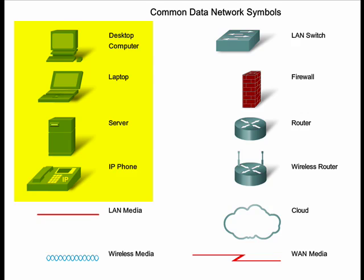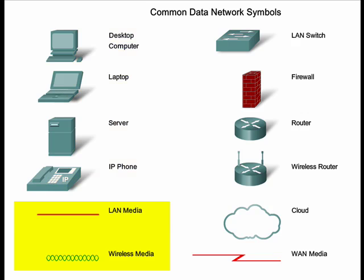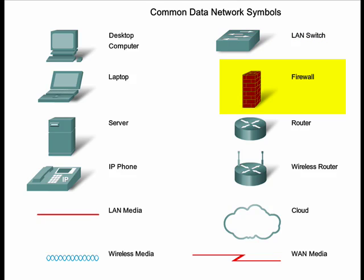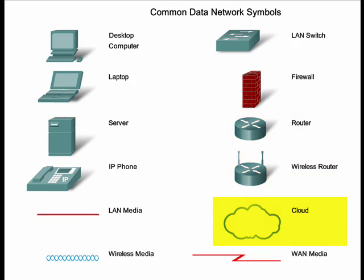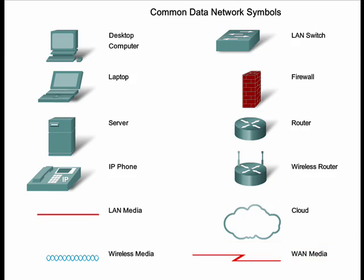On local area networks or LANs, these devices are connected using wired or wireless connections. This graphic also shows some of the most common intermediate devices that are used to direct and manage messages as they move through the network. Some common intermediary devices include a LAN switch, which is the most common device for interconnecting local networks; a firewall, which provides security to networks; routers and wireless routers, which are devices used to direct messages as they travel across the network; a cloud, used to summarize a group of networking devices; and a serial link, which represents wide area networks or WAN interconnections between two local area networks. It's important to understand the basic symbols of a network because they're used frequently to illustrate and teach us about data networks.